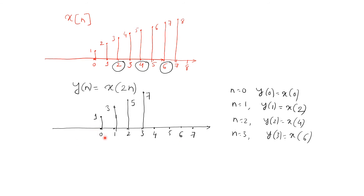So here we can observe that y(n) is a scaled version of x(n). But during scaling, we will lose some samples or some values. That is, at n = 1 the value of the signal is 2, which is lost and does not appear here. Similarly, at n = 3 the value 4 is lost, and at n = 5 the value 6 is lost. Therefore, in discrete time signals, if k value is greater than 1, then some values of the discrete time signal y(n) will be lost.